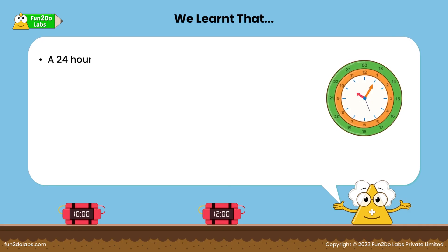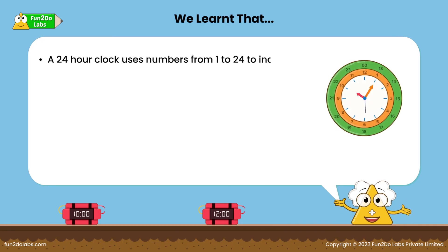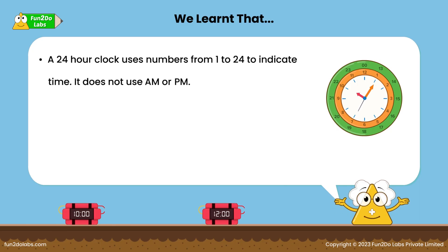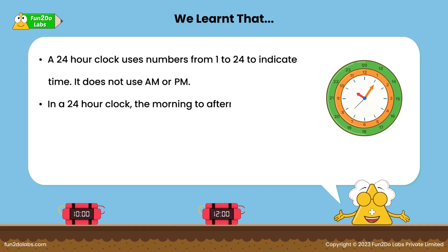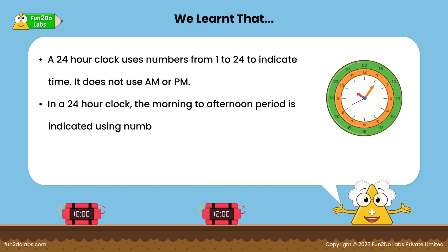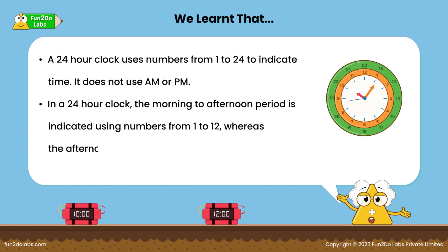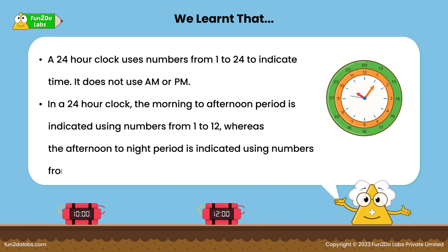A 24-hour clock uses numbers from 1 to 24 to indicate time — it does not use AM or PM. In a 24-hour clock, the morning to afternoon period is indicated using numbers from 1 to 12, whereas the afternoon to night period is indicated using numbers from 13 to 24.